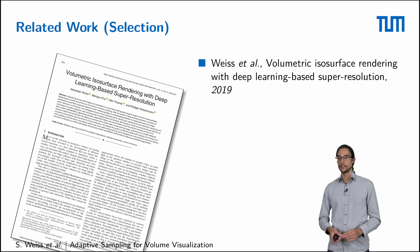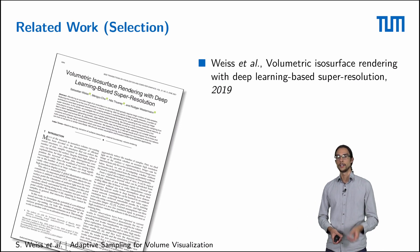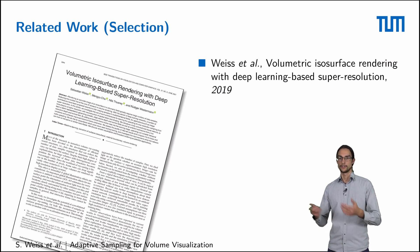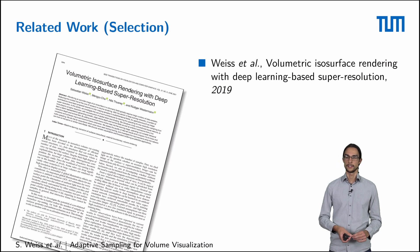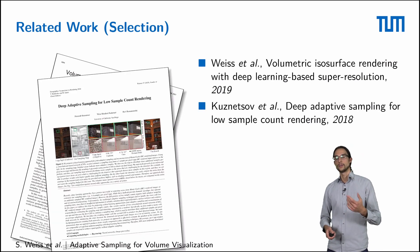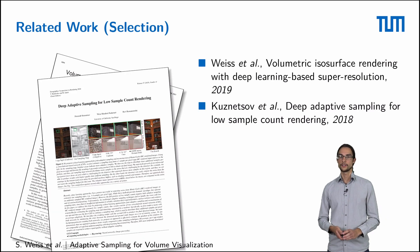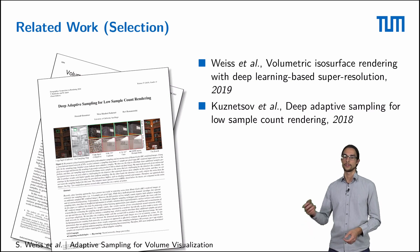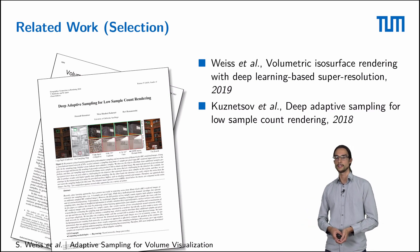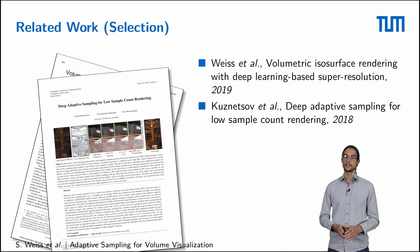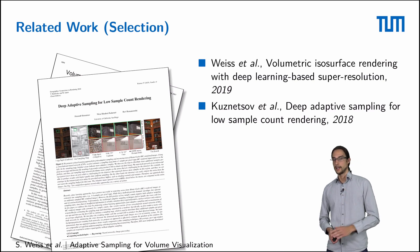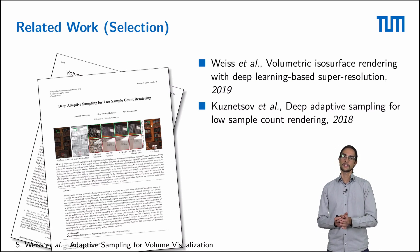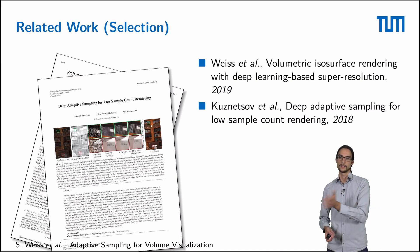With respect to neural networks, in a previous work of ours we showed that neural networks are very powerful for upscaling tasks — specifically a four times upscaling project. The work most related to this current work is by Kersner et al. from 2018, where they used adaptive sampling for Monte Carlo path tracing, where a neural network estimates how many samples should be taken per pixel, between one and many.